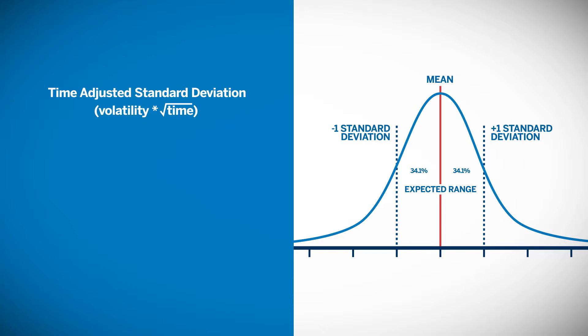For example, if the underlying price was 100 and the volatility was 20%, a one-standard deviation move would be 20 points up or down. This would create an expected price range of 80 to 120.